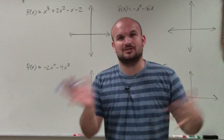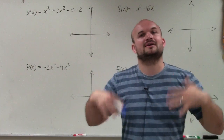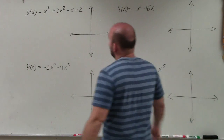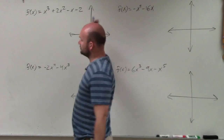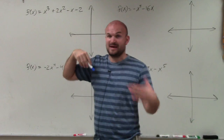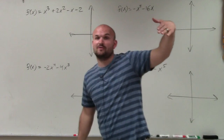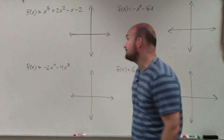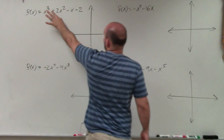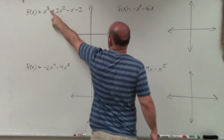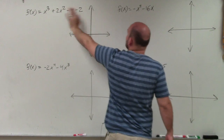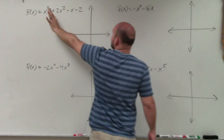That's in a totally different video, however I will go over it a little bit here. To determine end behavior using the leading coefficient test, we have to have our highest power first and then going down in descending order. You can see here we have our highest power, which is 3, and then the powers are going down in descending order.